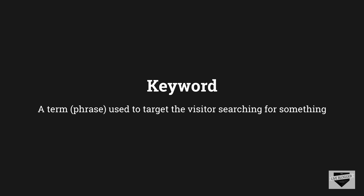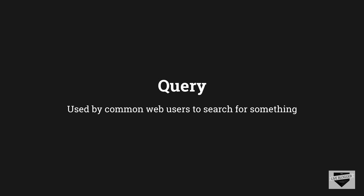Now if we talk about keywords, they are basically phrases used to target the visitor that searches for something. So if the visitor searches for queries like "buy a new smartphone," then the keyword targeted for such a visitor is "smartphone." Whenever the visitor searches for that query, the ads which are set with the keyword "smartphone" will get displayed to the visitor.